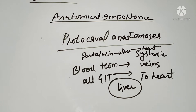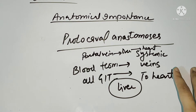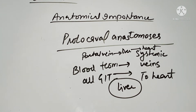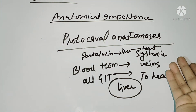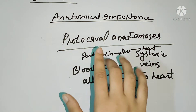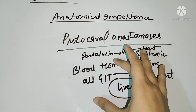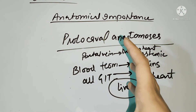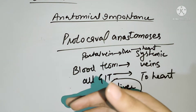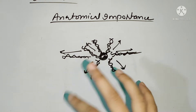There are many other portocaval anastomosis sites, including the lower esophagus. At the umbilicus level, if there is any obstruction, we have portal hypertension. Portal hypertension means the portal vein pressure rises because blood cannot drain into the systemic veins normally. This causes obstruction, and the veins begin to dilate.